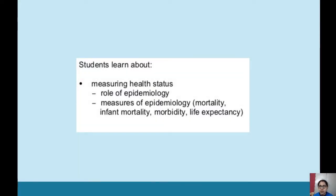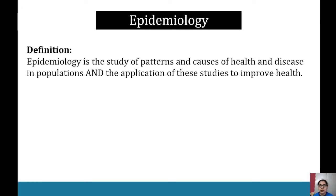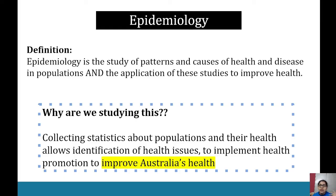The first dot point is measuring health status: the role of epidemiology and measures of epidemiology. We're looking at how we measure health status in Australia, and that's where epidemiology comes in. Epidemiology is the study of patterns and causes of health and disease in populations, and the application of these studies to improve health — not only gathering data but also applying it. Collecting statistics about populations allows us to identify health issues and implement health promotion to improve Australia's health.